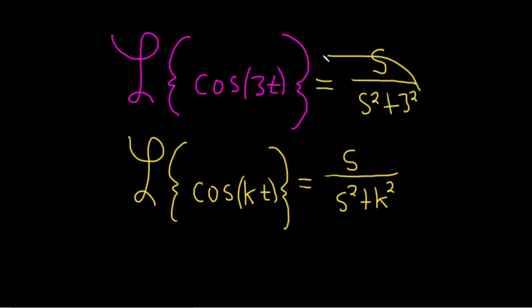And 3 squared is 9, so we just end up with s over s squared plus 9. And that would be the Laplace transform of cosine 3t. Good luck!